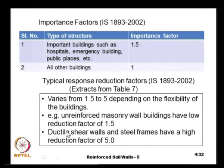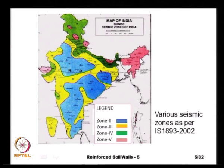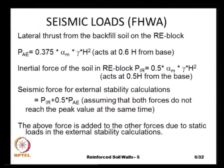This map shows the different zones — zone 2, 3, 4, and 5. Zone 2 is in blue, zone 3 is in yellow, zone 4 is in green, and zone 5 is in pink. For example, Chennai is in zone 3, and the Deccan Plateau is in zone 2, which is relatively not very active seismically. The acceleration coefficient calculated can be used for estimating additional loads on reinforced soil structures.